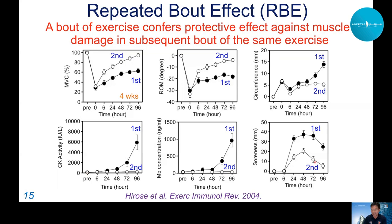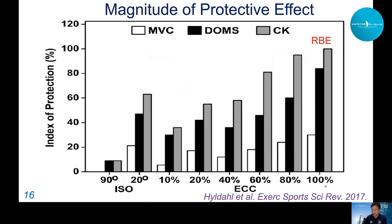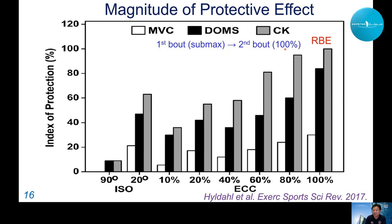The repeated bout effect for 100% eccentric exercise showed CK protection of about 100% (no increase after the second bout), DOMS protection of 80-90%, and overall about 40% protection for strength. Even very low intensity (10-20%) eccentric contractions as a first bout can provide some protective effect — the greater the intensity of the first bout, the greater the protective effect.